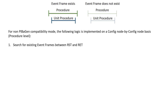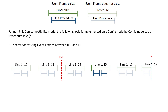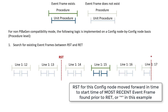For non-Pybogen compatibility mode, the following logic is implemented on a config node by config node basis. First, the interface searches for an existing Event Frame between RST and RET. In this case, RET is star, meaning now. If one Event Frame is found — for example, line 1, number 15 — the interface moves RST forward in time to the start time of the most recent Event Frame found between RST and star.